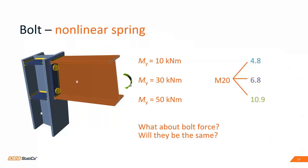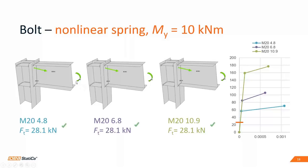I want to talk about bolt behavior, because our bolts are nonlinear springs. We created a small study on the behavior of M20 bolts in three grades under three cases of loads. What do you think — will the bolt forces be the same in each case? In the first example, the connection was loaded with 10 kN·m bending moment using M20 grade 4.8, 6.8, and 10.9 bolts. The tension force in the bottom bolt was the same for all three grades.